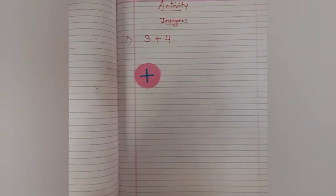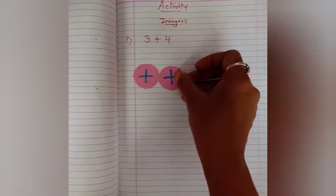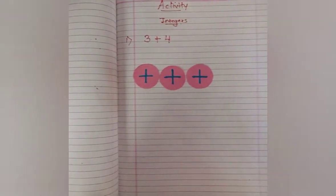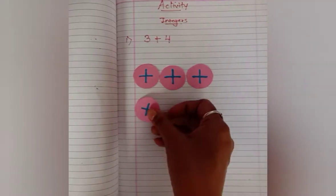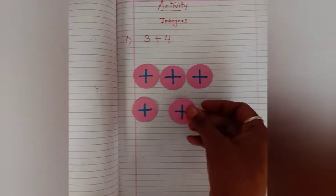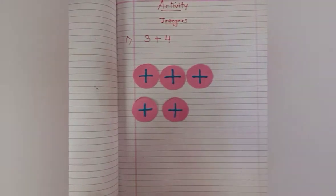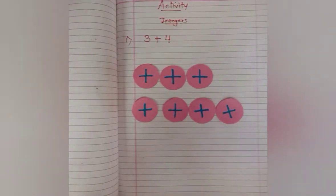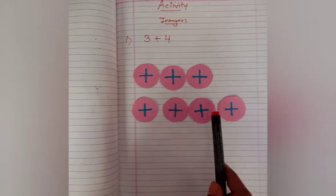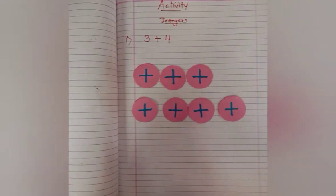Positive three — so three positive coins we are taking. Next is addition of positive four, so four plus circles we will take. Then count the total. What is the count? Count the total number. So total what we will get is simple addition: one, two, three, four, five, six, seven. So here our answer is seven.